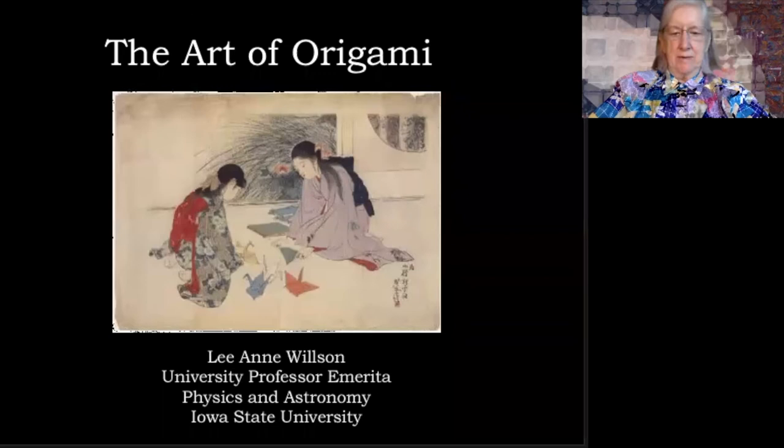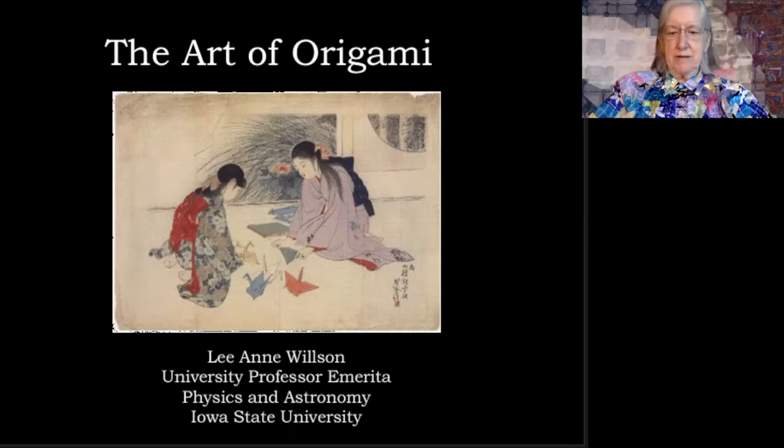Paper from plant fibers was invented in China in the second century, and the art of papermaking was first exported from China to Korea and Japan around 610 AD. Origami dates back roughly to the same time.